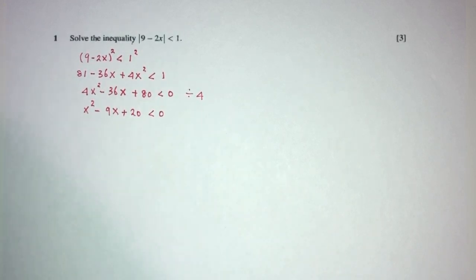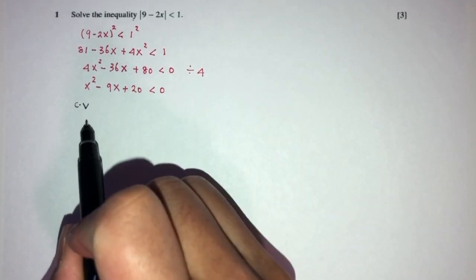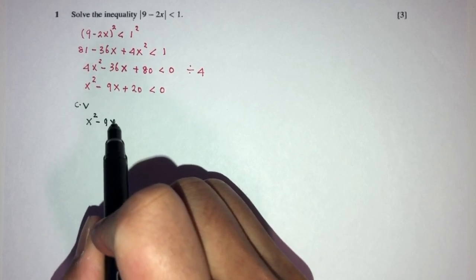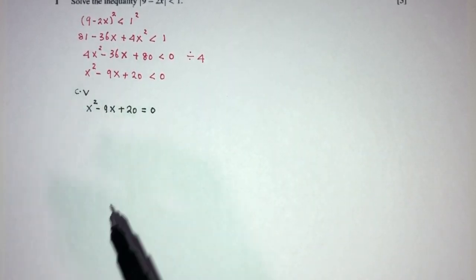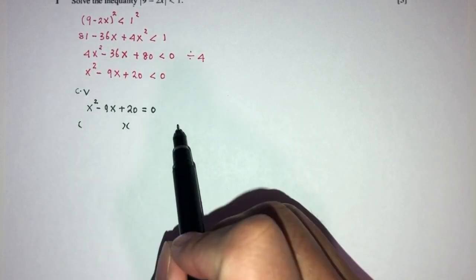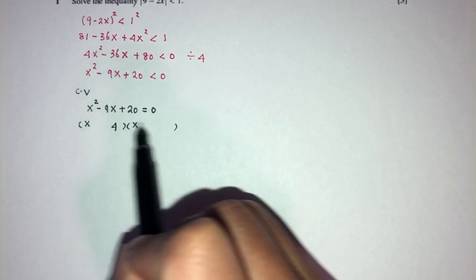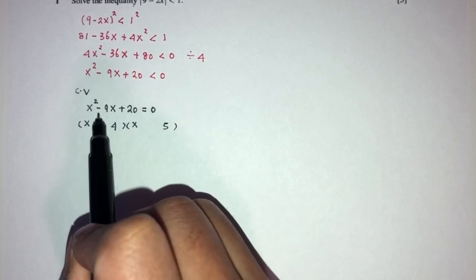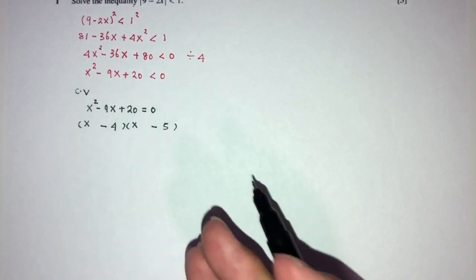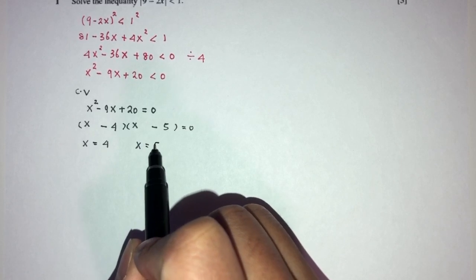Now, how do we solve this kind of equation? We have to find the critical values by equating to 0. This is a quadratic equation. To find the value of x, I can factorize. Here we have x times x. 20 is 4 times 5. I'll go with 4 times 5 because I need to get minus 9 here — minus 4 minus 5 equals minus 9, and minus times minus is plus. So the critical values are x equals 4 and x equals 5.